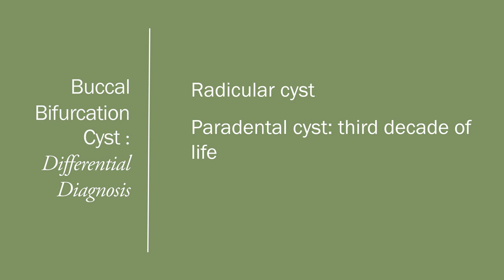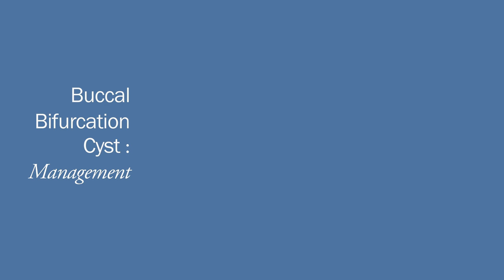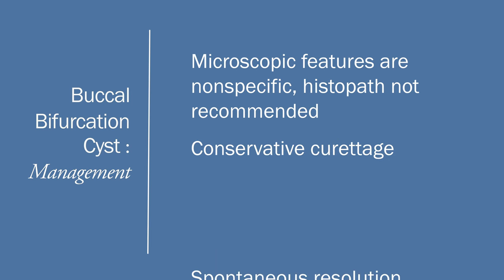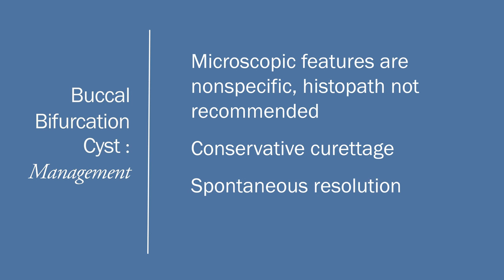A paradental cyst happens later in life, in the third decade, while the buccal bifurcation cyst happens in children aged 5 to 13. A paradental cyst is found distal to the third molars, not in the same area as a buccal bifurcation cyst. Sometimes a dentigerous cyst arising from an impacted molar may extend mesially and give the appearance of a buccal bifurcation cyst. Histopathological examination is not recommended for buccal bifurcation cyst because the microscopic features are non-specific; it is diagnosed based on clinical and radiographic findings. The cyst may resolve spontaneously; the affected tooth should not be extracted.